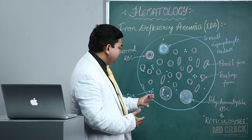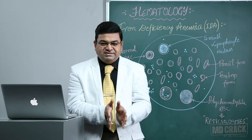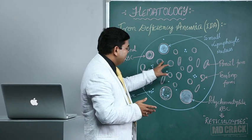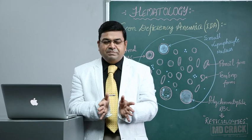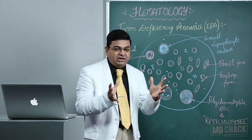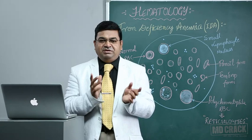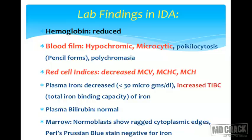In iron deficiency anemia, there are few changes in WBCs. RBC mass is reduced, hemoglobin is reduced, mean corpuscular volume is reduced, mean corpuscular hemoglobin is reduced, mean corpuscular hemoglobin concentration is reduced. All parameters are reduced except TIBC — total iron binding capacity — which is raised. Serum ferritin and serum iron levels are also reduced.